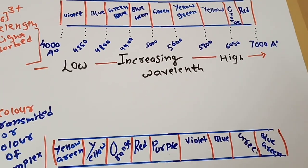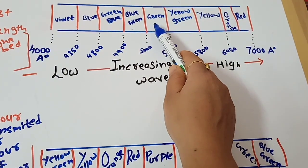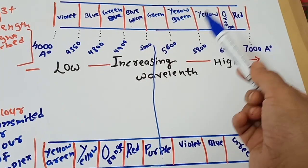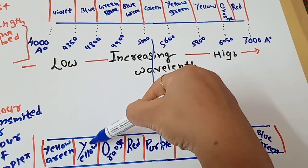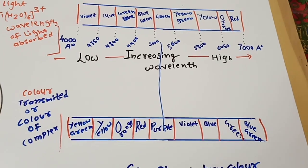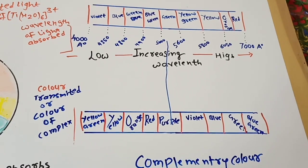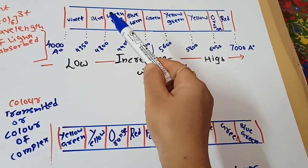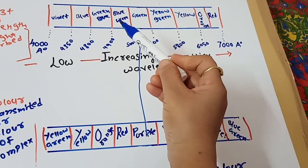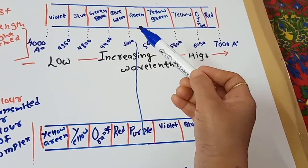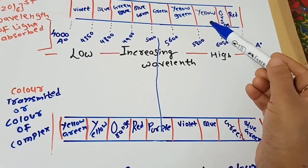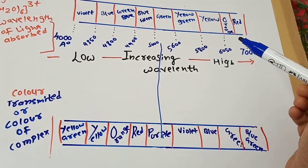Every color has its own complementary color. If a complex absorbs violet light, it appears yellow-green; blue light → yellow; blue-green light → orange; green light → red or purple; yellow-green → violet; yellow → blue; orange → green; red → blue-green. The wavelength increases from violet to red, while energy decreases in that order, since wavelength and energy have an inverse relationship.